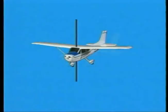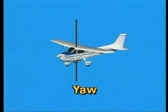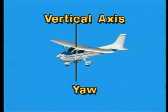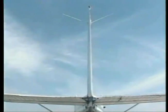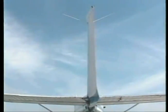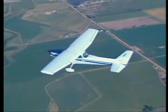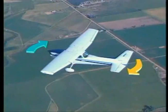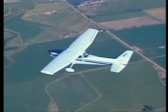The swinging movement of the nose to the left and right is called yaw and occurs about the vertical axis. This rotation is controlled by the rudder. When you step on the right rudder pedal, the rudder deflects to the right, which creates an aerodynamic force to the left, causing the nose of the airplane to yaw to the right. Keep in mind that the rudder is not used to turn an airplane in flight; its primary function is to align the fuselage with the direction of flight.